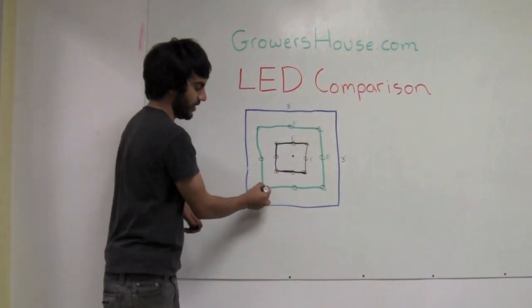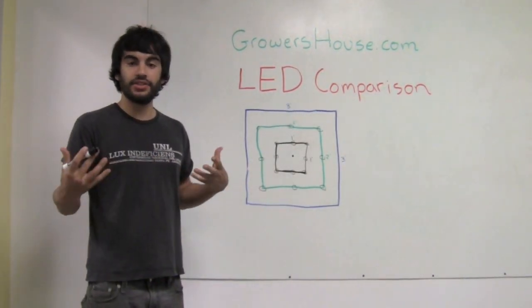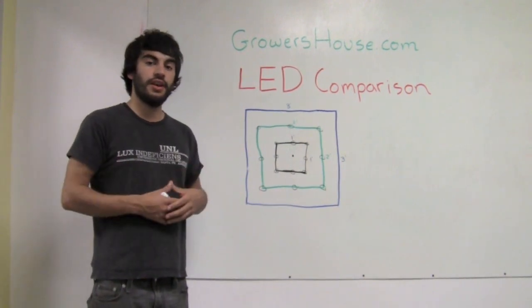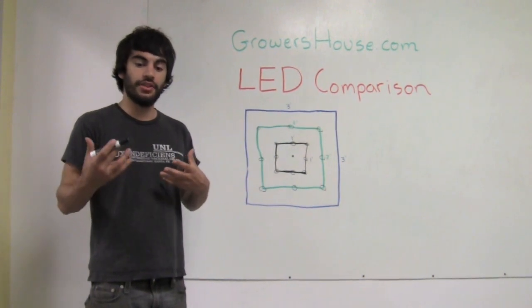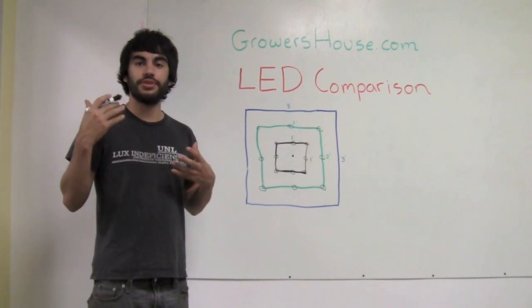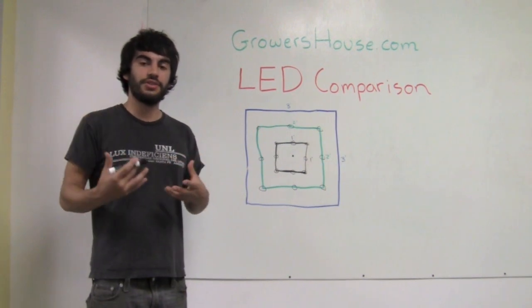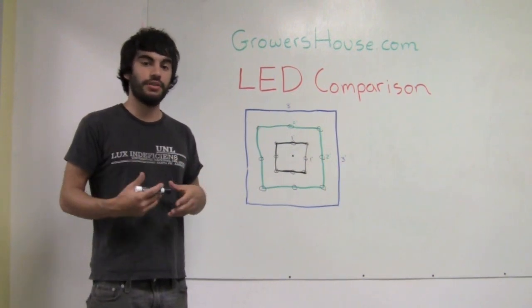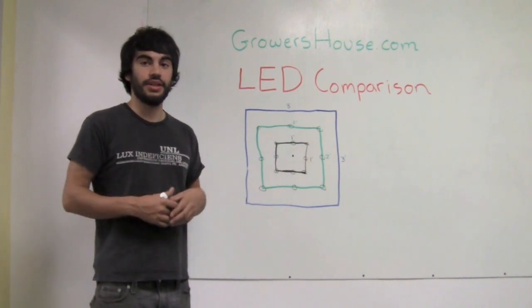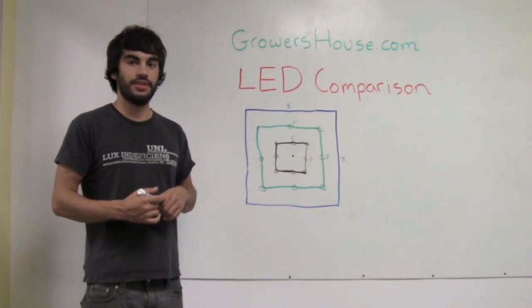Many people might ask why we didn't test the lumens for these LEDs. Well that's because lumens is a term that measures the intensity of light that's visible to the human eye. What we really wanted to measure was the spectrum that plants use to photosynthesize, so that's what the PAR meter did versus measuring something that could be out of the spectrum that plants use to photosynthesize. So let us jump into the video and you can see how we ran the test on some of these lights.